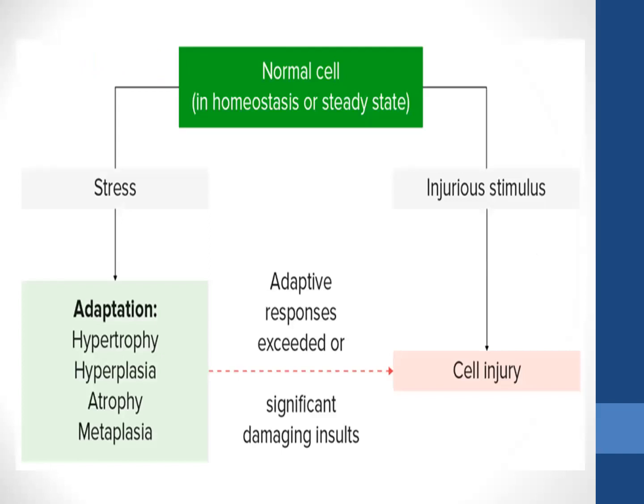A normal cell under physiological conditions maintains a steady state which is called homeostasis. When a cell encounters stress, it first tries to adapt by means of various mechanisms. If it is unable to adapt, or if the stimulus is significantly damaging, it results in cell injury. Cell injury can also occur directly if the injurious stimulus is very potent.